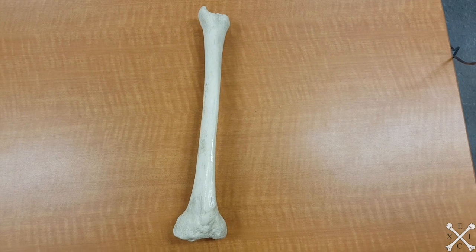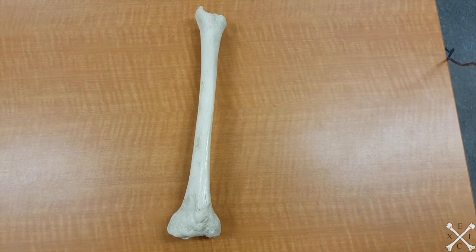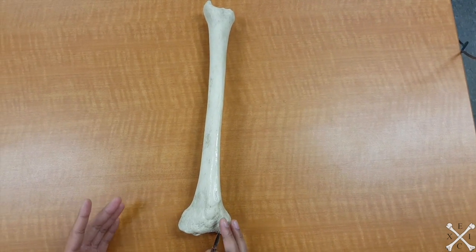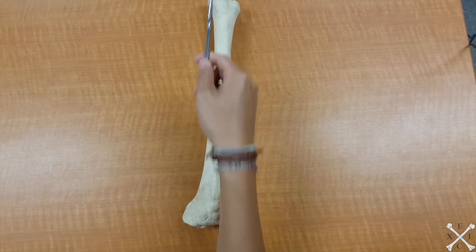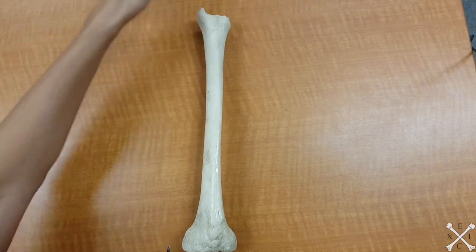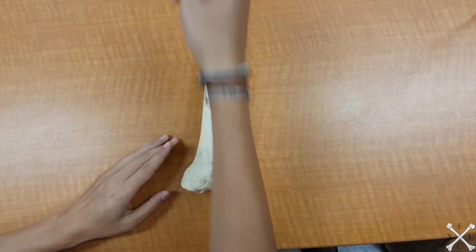All right, so we're going to be looking at the tibia right now, and an important thing to know is this is going to be your right tibia and we're looking at it upside down. So pretend that some guy's foot is here, right? And the knee would be here. We're looking at it like that.